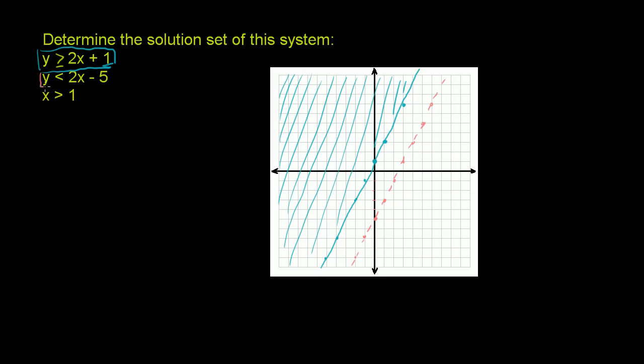So the solution set for this second inequality is going to be all of the area below the line, right? For any x, this is 2x minus 5, and we care about the y's that are less than that. So let me shade that in.